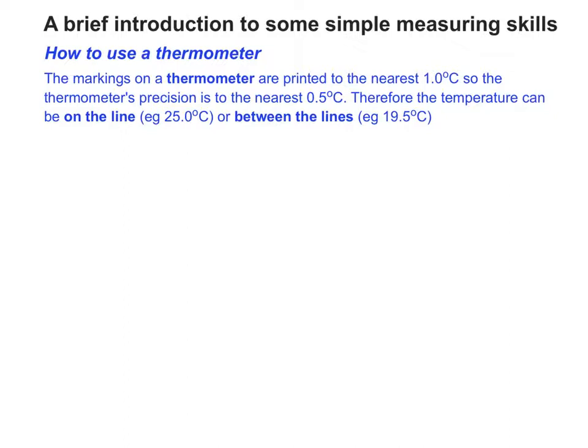The markings on the thermometer are printed to the nearest 1.0 degrees centigrade, so the thermometer's precision is to the nearest 0.5 degrees C. The temperature can be either on the line or between the lines. If it's on the line, it'll be a value with 0.0 next to it. If it's between the lines, it'll be a value with 0.5. As you can see, the example's 25.0 degrees C or 19.5 degrees C.